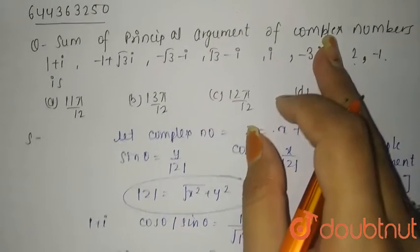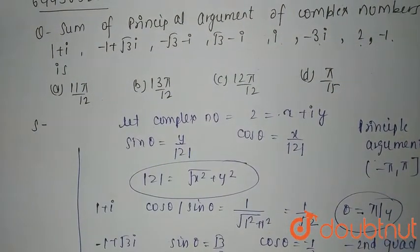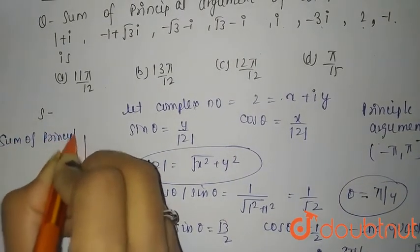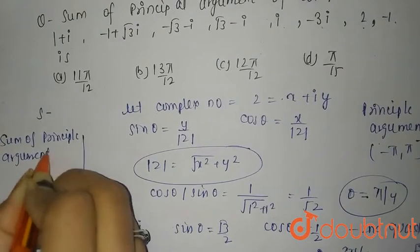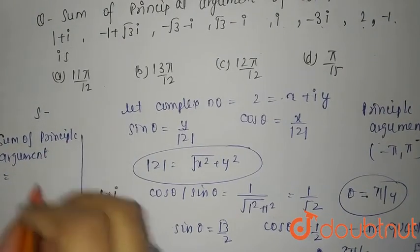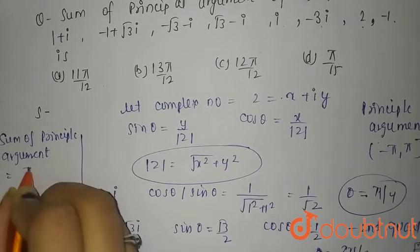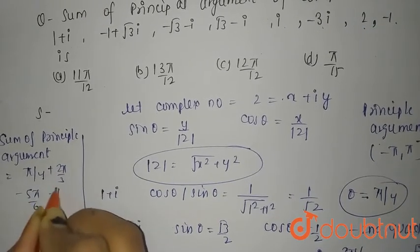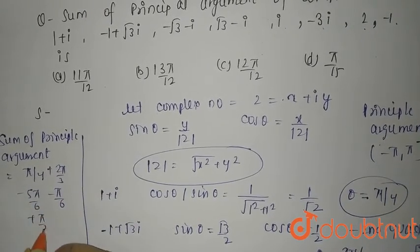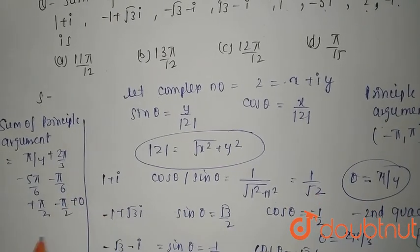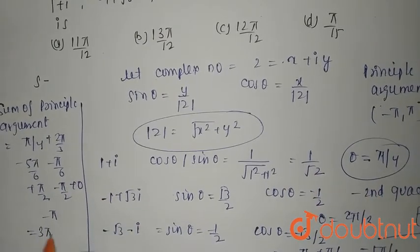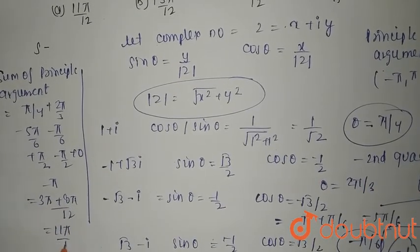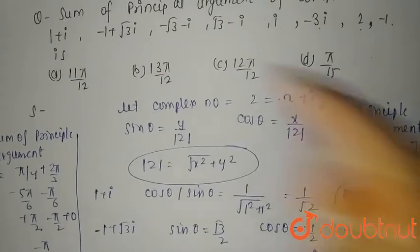Now we find the sum of all principal arguments: π/4 + 2π/3 + (−5π/6) + (−π/6) + π/2 + (−π/2) + 0 + π. This simplifies to (3π + 8π)/12 = 11π/12, which is option A. I hope that is clear, thank you.